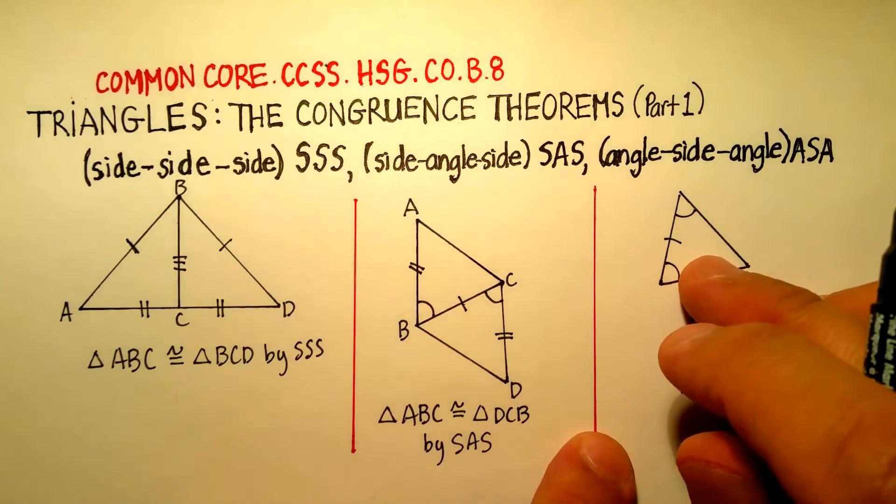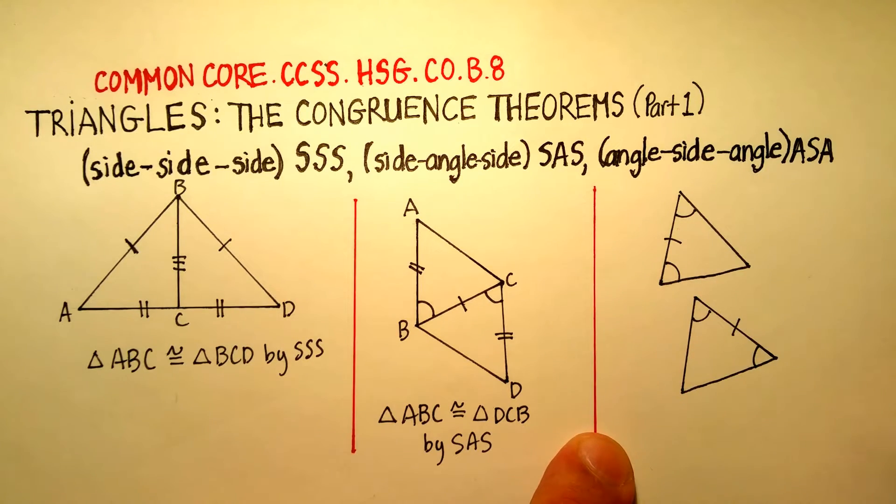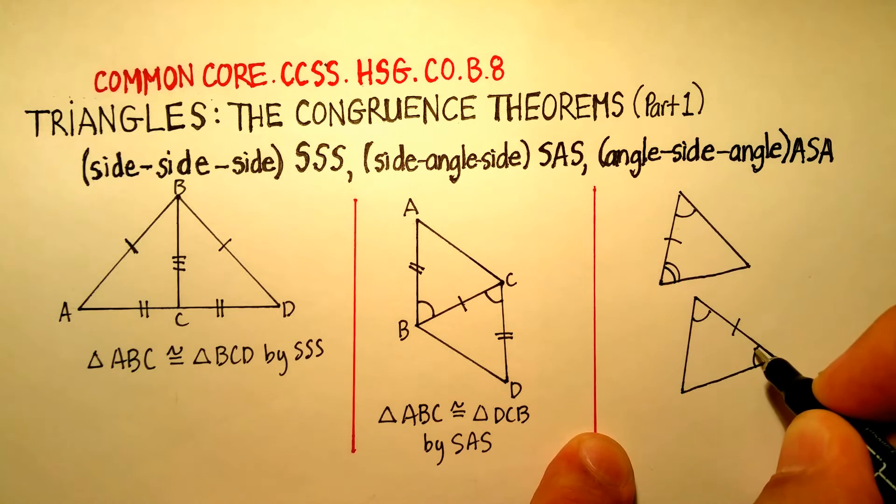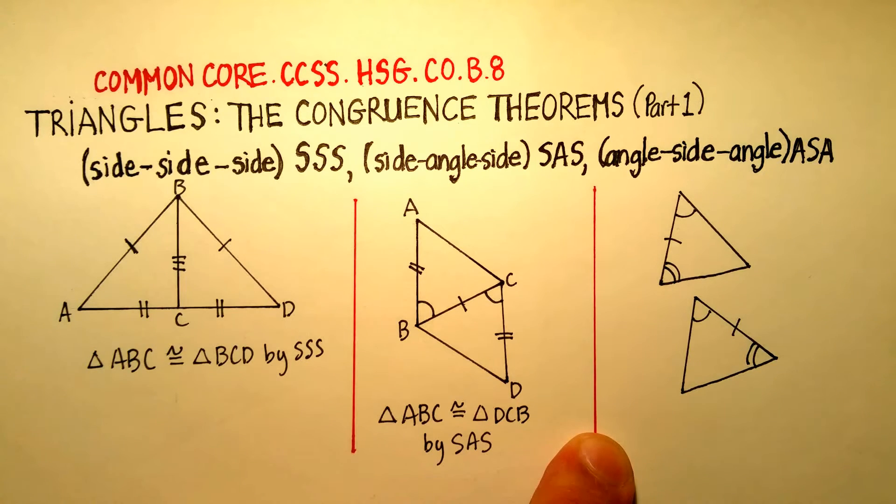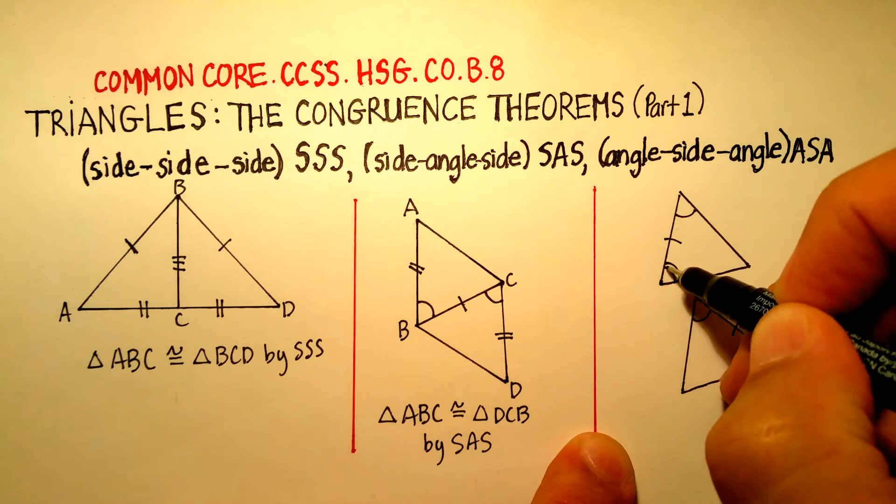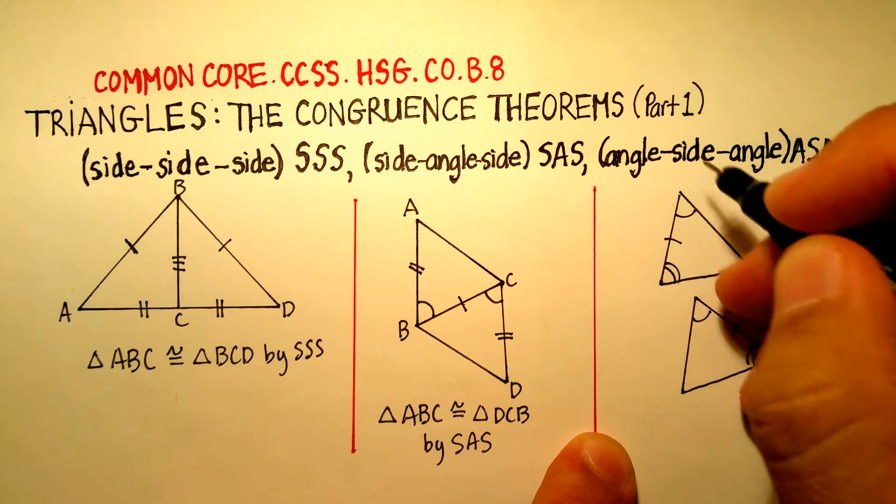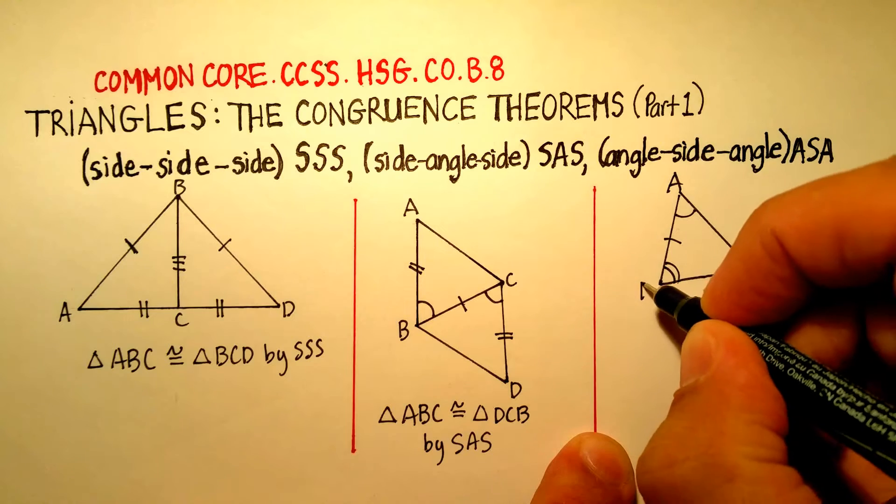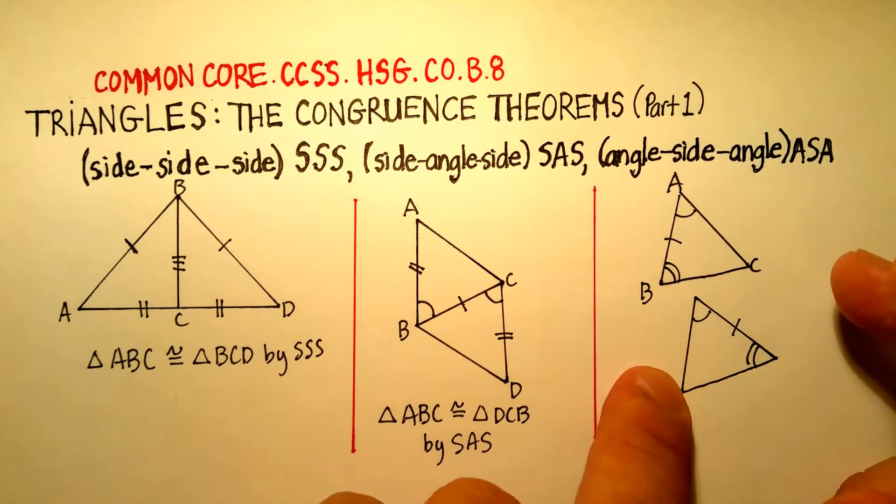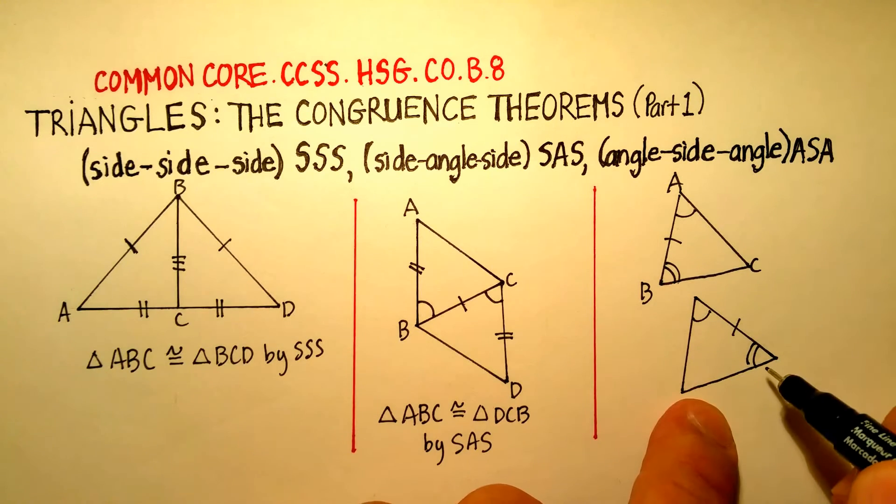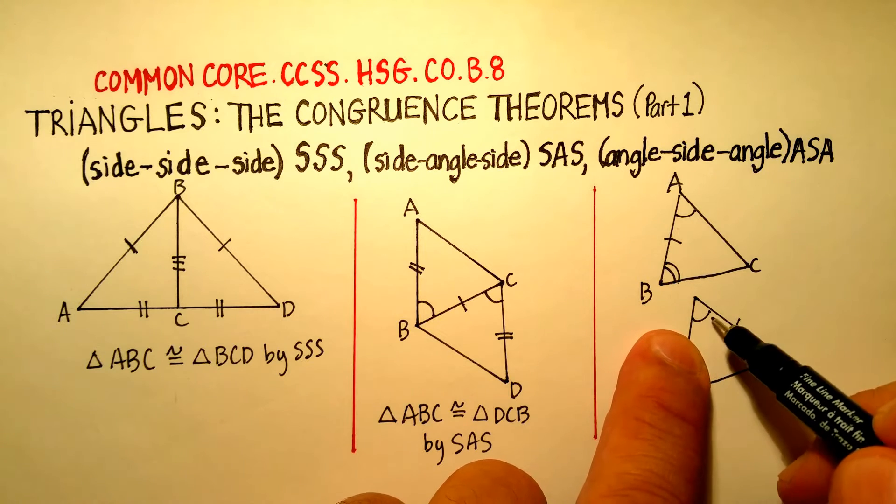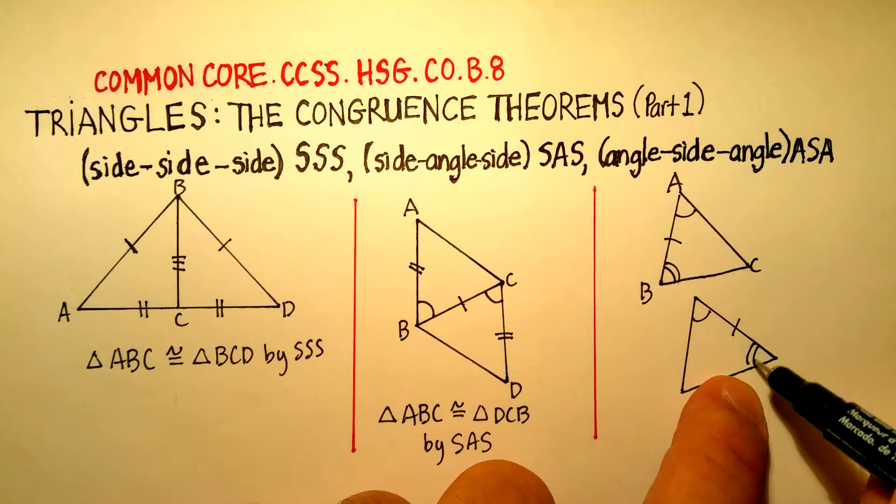And finally, let's just go to the last theorem. And this is angle-side-angle. And again, you'll notice how this works. I'm going to make these angles the same. So according to this, the angle-side-angle of this first triangle is congruent to this same one where it goes this angle, the side, and the angle.